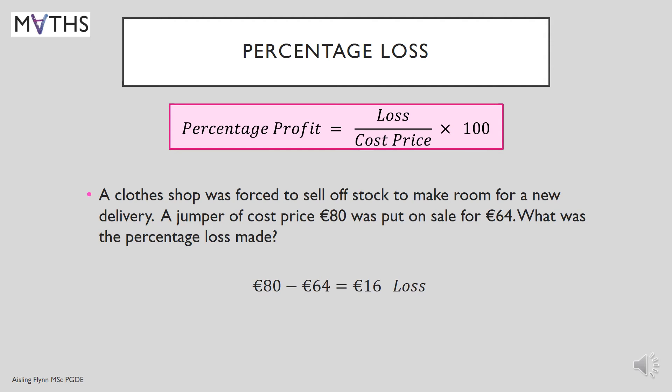Now, how significant is that loss? What is the percentage loss? We put that over the cost price — 16 out of 80 was lost. Multiply it by 100. So, 16 divided by 80 multiplied by 100 gives you 20%. There was a 20% loss.